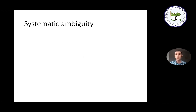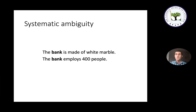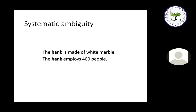All the examples of ambiguity so far are in some sense arbitrary — there's no special reason why 'measuring stick' and 'leader' have the same pronunciation in English. But there are other types of ambiguity that do have a stronger reason behind them, which we can call systematic ambiguity. One example involves words that refer to organizations or companies. Any such word like 'bank' is ambiguous between the abstract organization and the concrete building that hosts it. In 'The bank is made of white marble,' bank means the building; in 'The bank employs 400 people,' it means the organization.